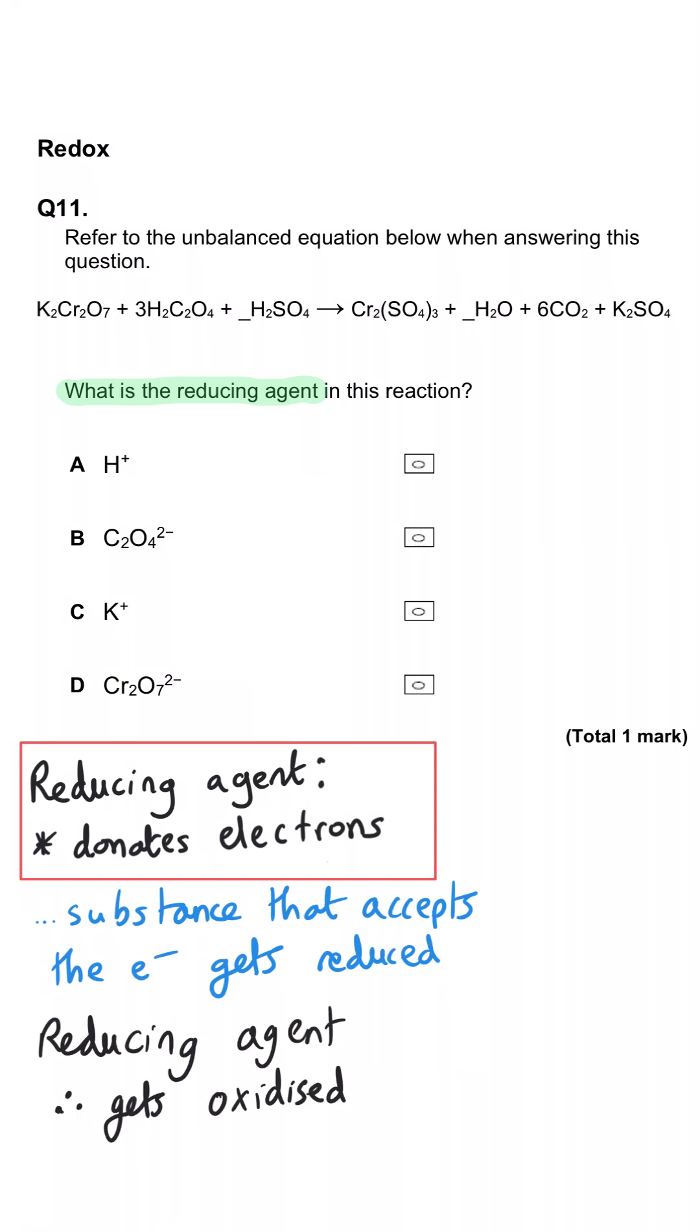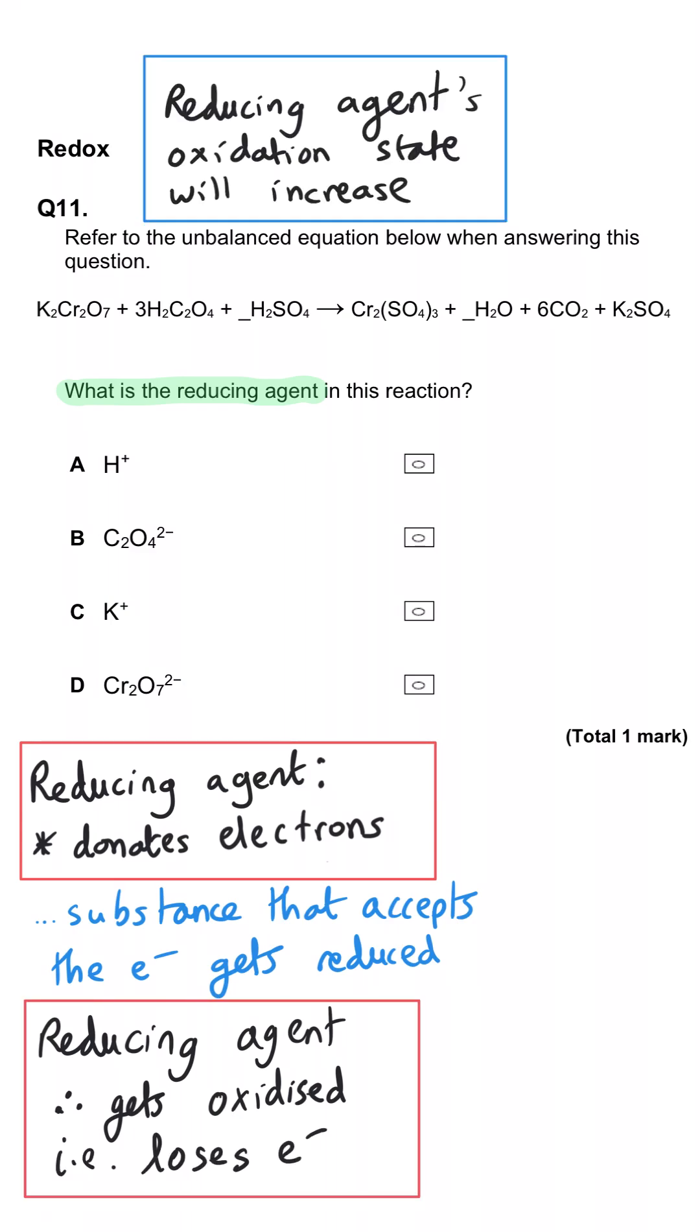So we're looking for the element that's been oxidized because their oxidation state has gone up. Is it hydrogen? No, it's not hydrogen because we've got hydrogen with plus one and plus one and plus one.